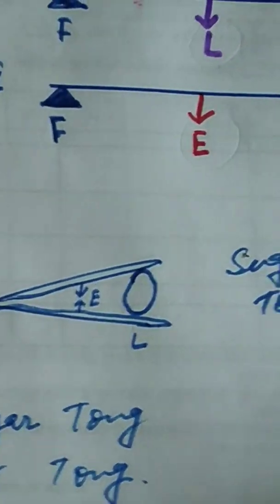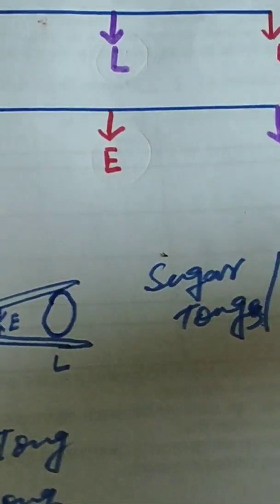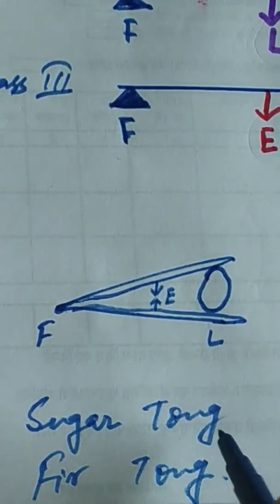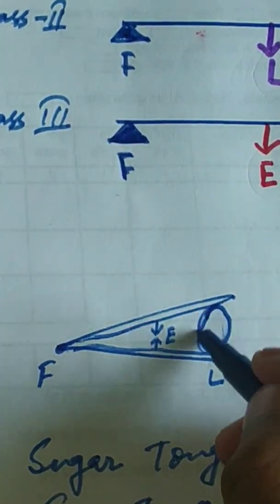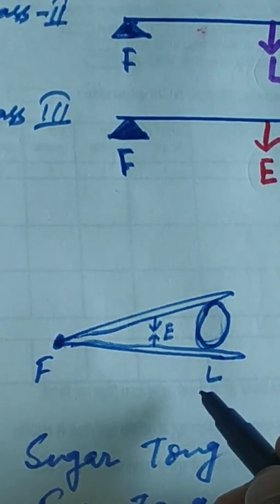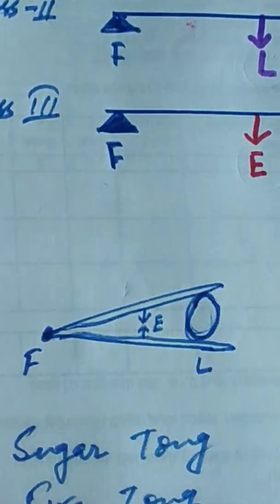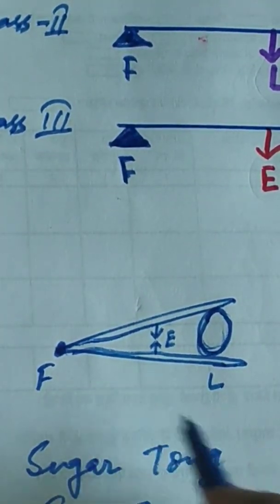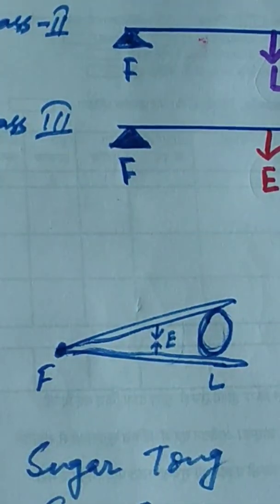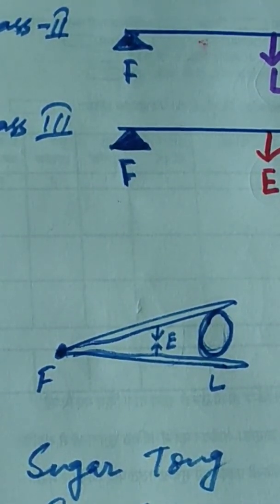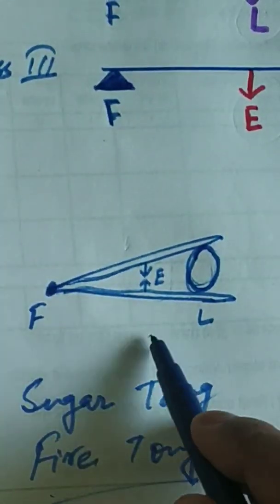In the third class lever, the effort is in the middle — fulcrum and load are on either side. Look at this sugar tong, or fire tong — chimta in Hindi. The sugar acts as the load, here is the fixed point as the fulcrum, and we apply force in the middle. This holds the load easily. The fulcrum is at one end, the load is at the other end, and we apply force in the middle. That is the third class lever.